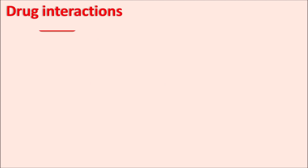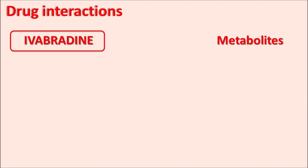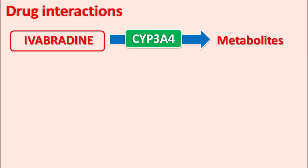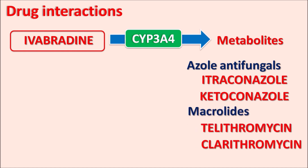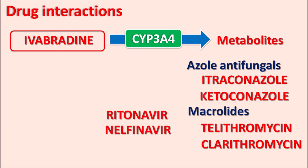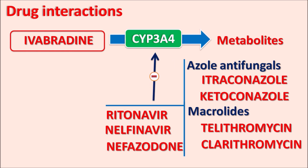Ivabradine is mainly converted to metabolites by the cytochrome P450 system, particularly CYP3A4. Strong CYP3A4 inhibitors — such as azole antifungals like itraconazole and ketoconazole, macrolides like telithromycin and clarithromycin, protease inhibitors like ritonavir and nelfinavir, and antidepressants like nefazodone — can block CYP3A4 activity, inhibiting metabolism of Ivabradine and resulting in elevated drug levels causing toxicity. These drugs are contraindicated with Ivabradine as this combination produces severe bradycardia.